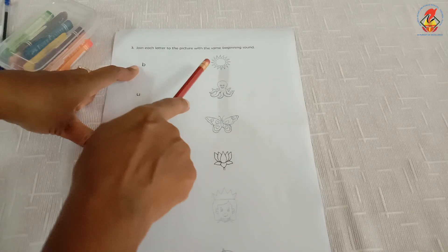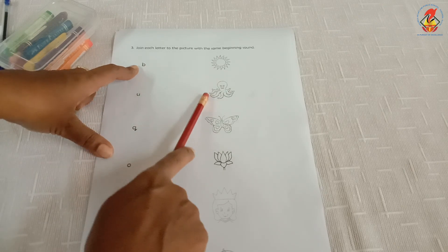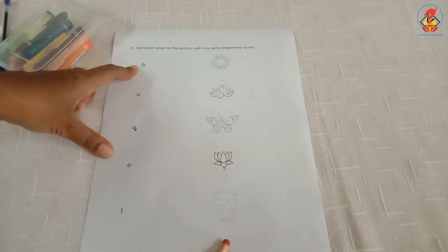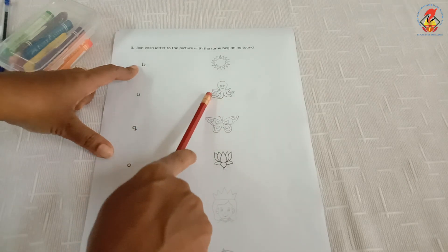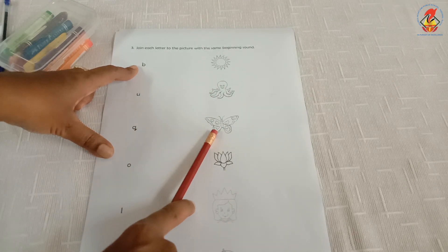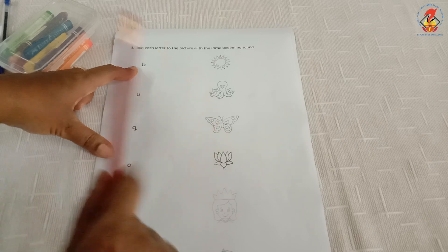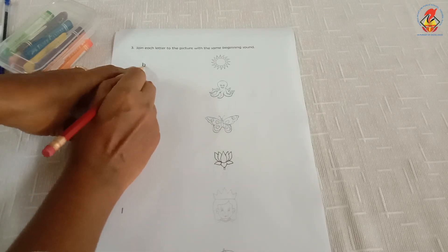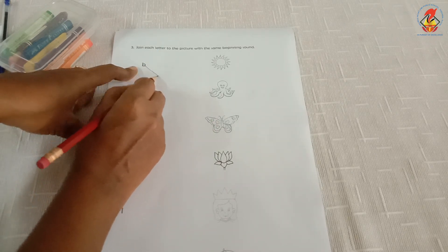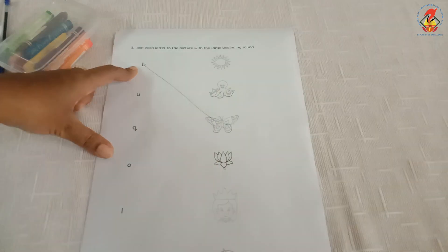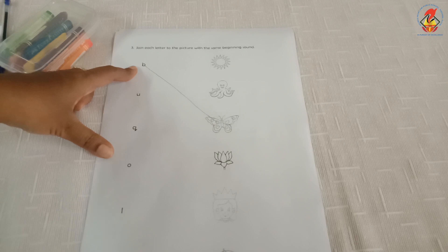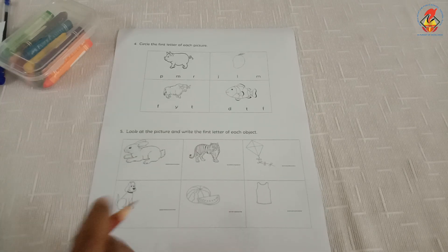Can you say B for what comes here? Yes, here comes butterfly. B butterfly. So, you have to match letter B to butterfly. In the same way, you have to do the other questions.